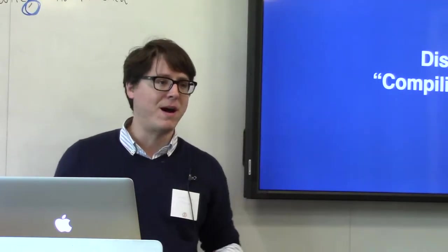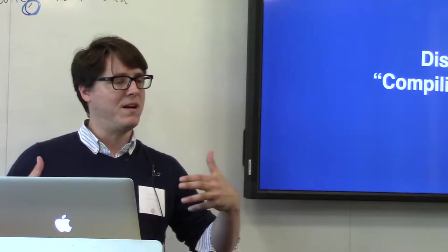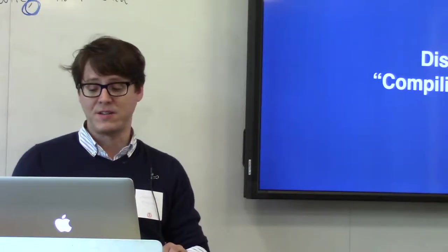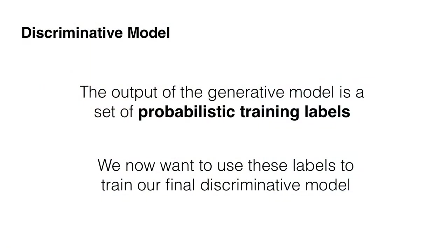The output of the generative model — we've learned these latent accuracies and now we've emitted a marginal probability for every one of our training candidates. This is a zero-to-one value that tells us our confidence in a true or false label. Normally when we train machine learning models we use a hard label, zero or one. Now we're training on this more informative label that's some probability.